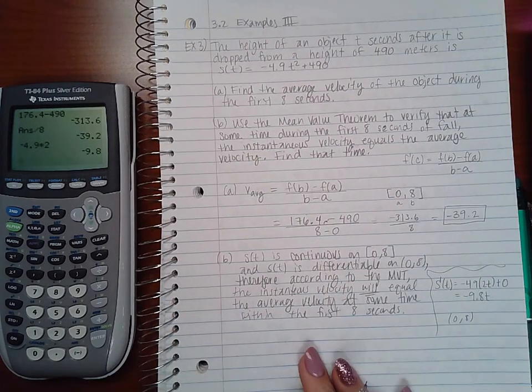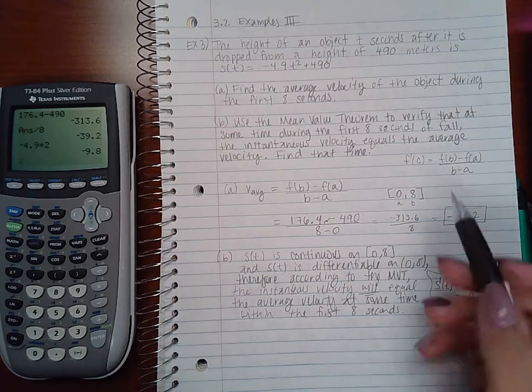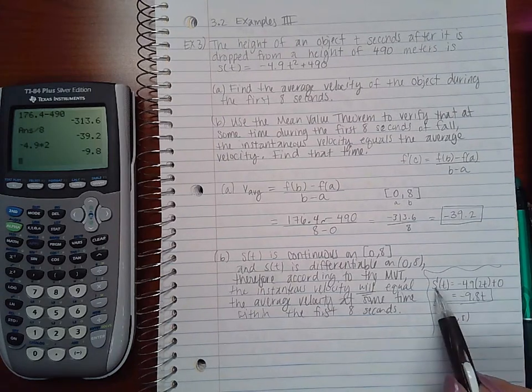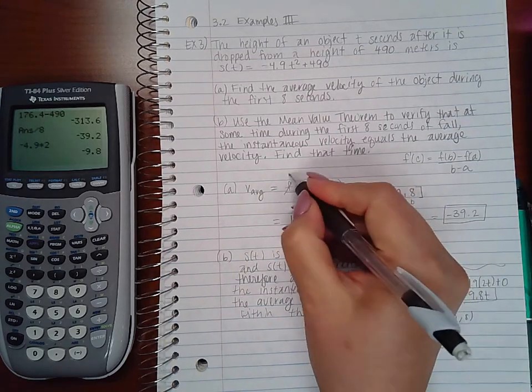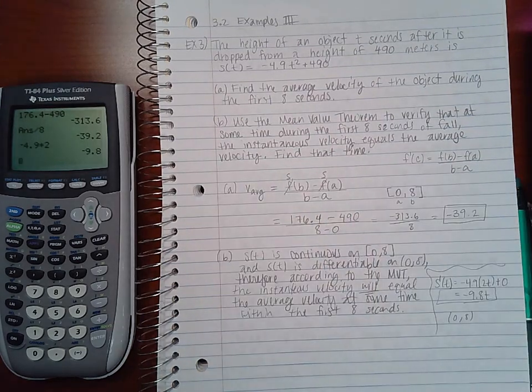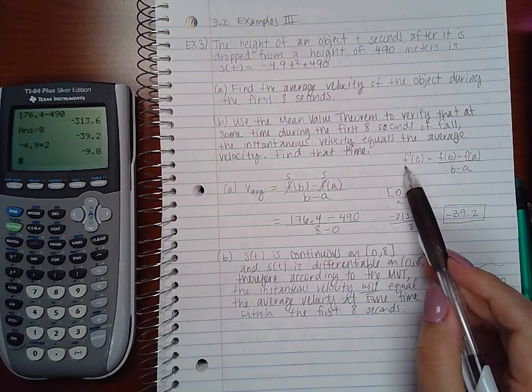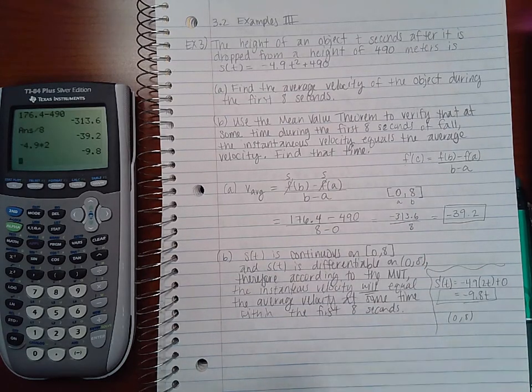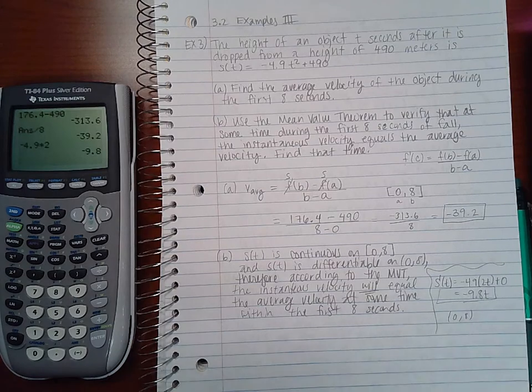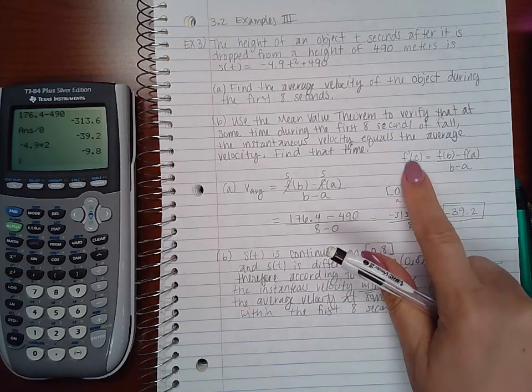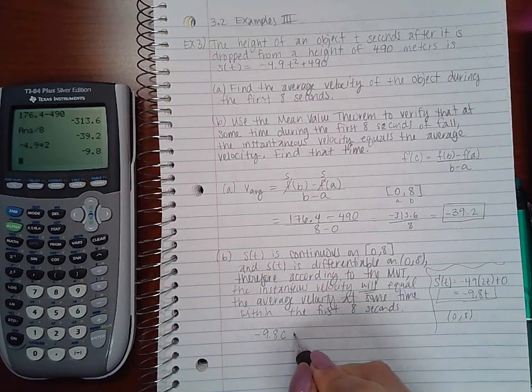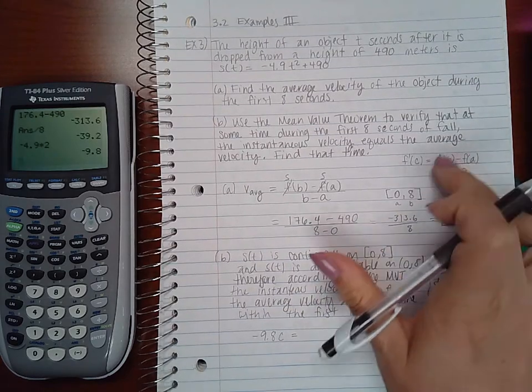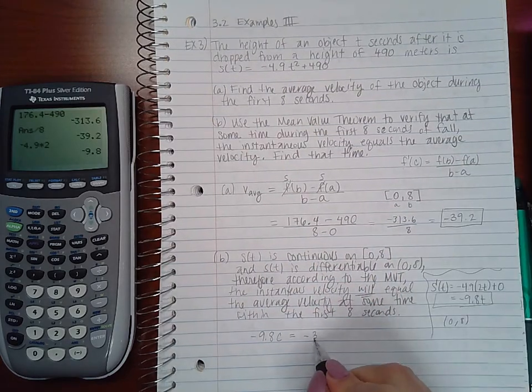But now it wants me to find that time. So since I've already found s'(t) in this particular case, and you could use s's here instead of f's, it doesn't matter what they named the function. So here, if I want to take that and I want to evaluate it at c, I'm going to get -9.8c.